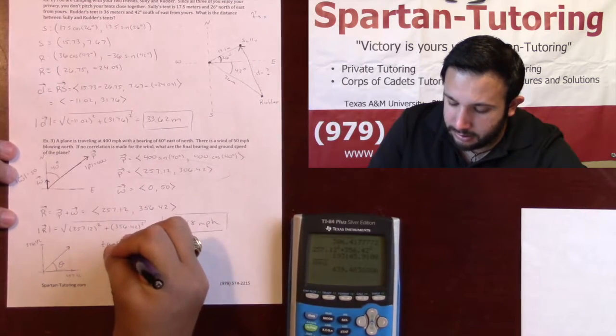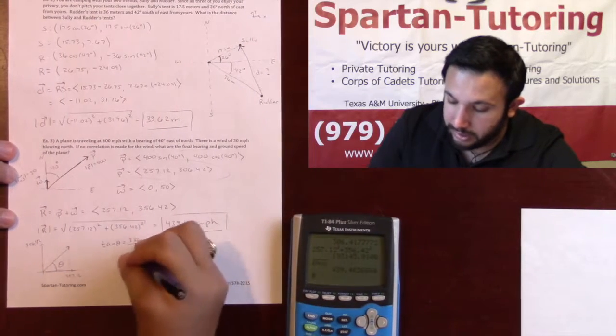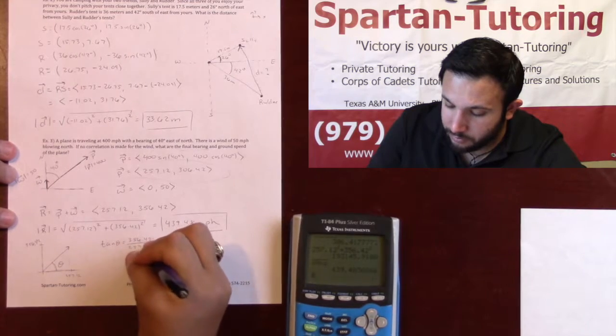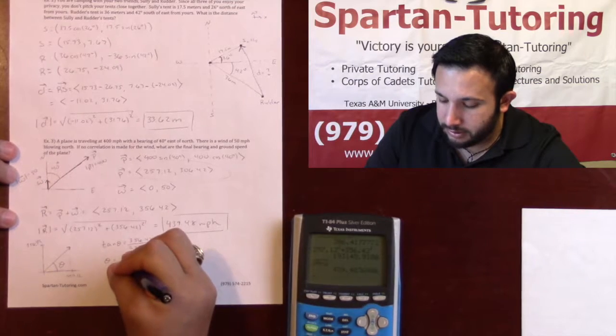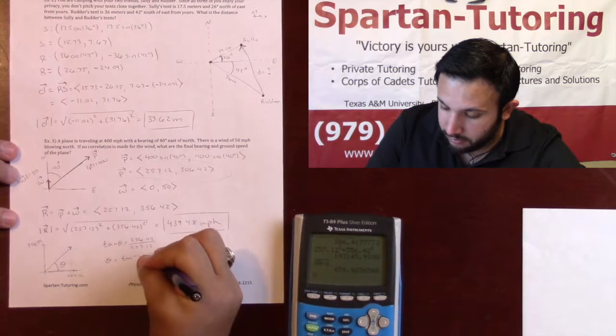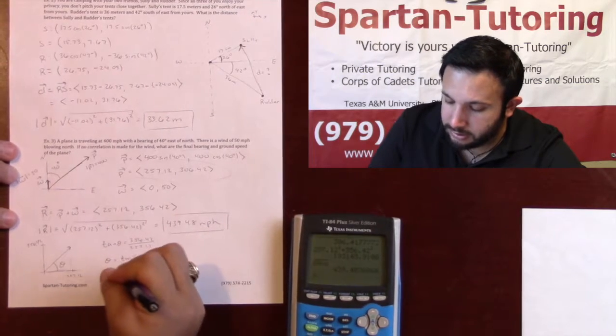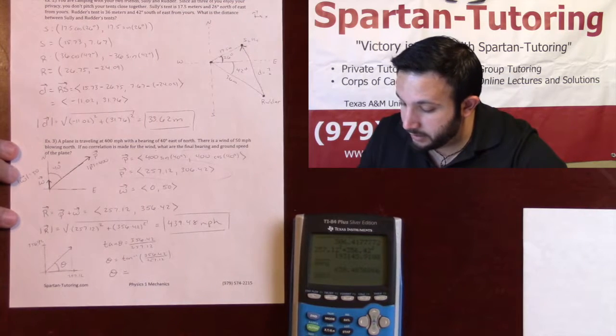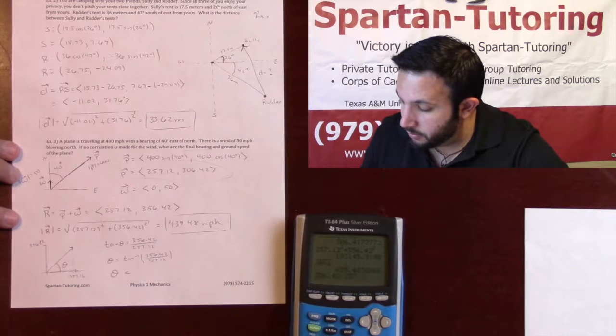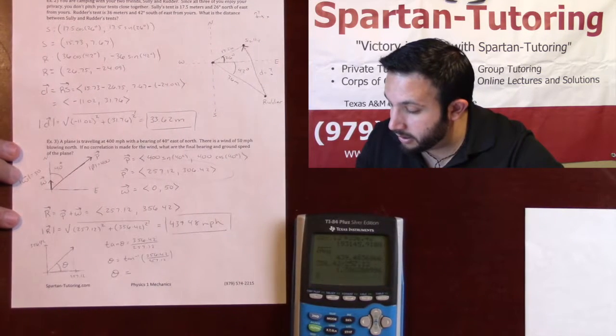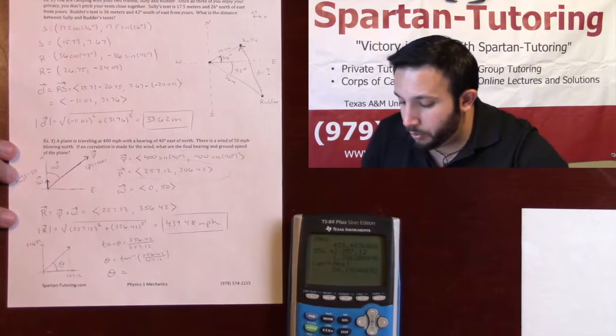So tangent theta, which is opposite 356.42 over my adjacent 257.12. Theta is going to be the arc tangent of this. Let's go ahead and put that into our calculator. We'll take 356.42 divided by 257.12, and we'll take the arc tangent of what we've got. What we get is 54.19.